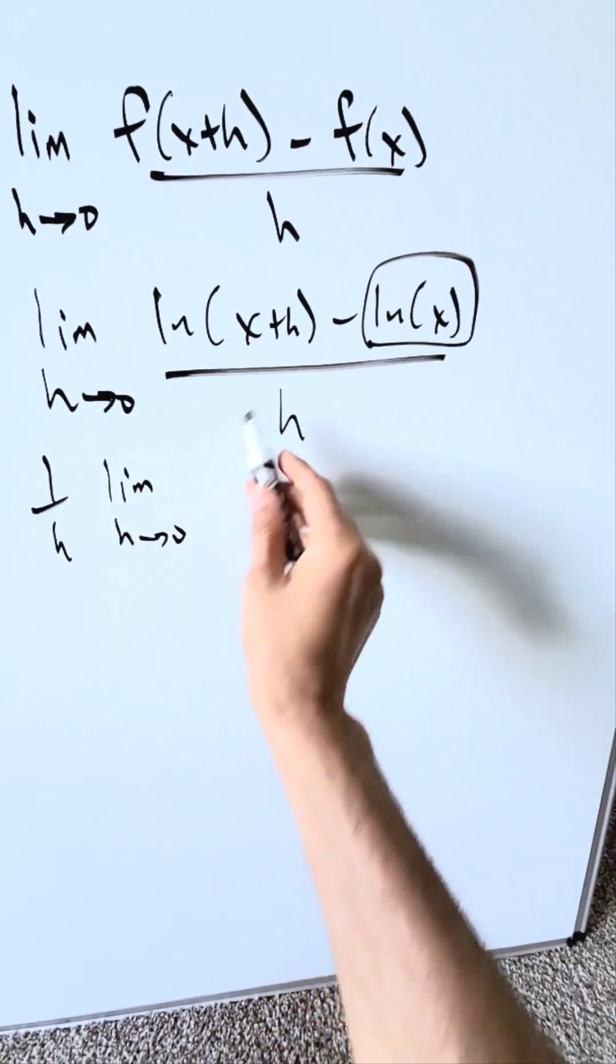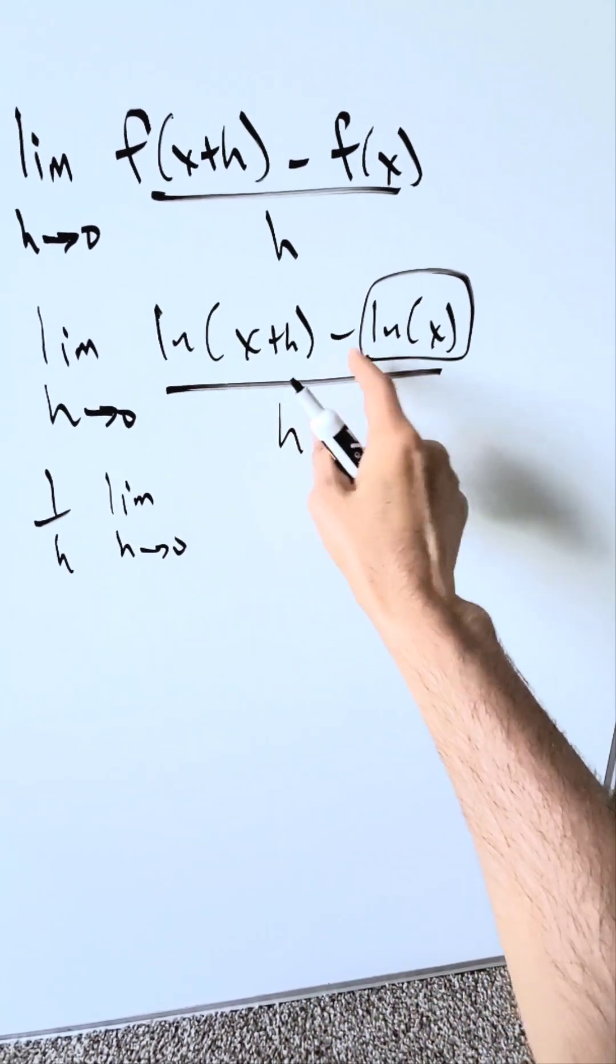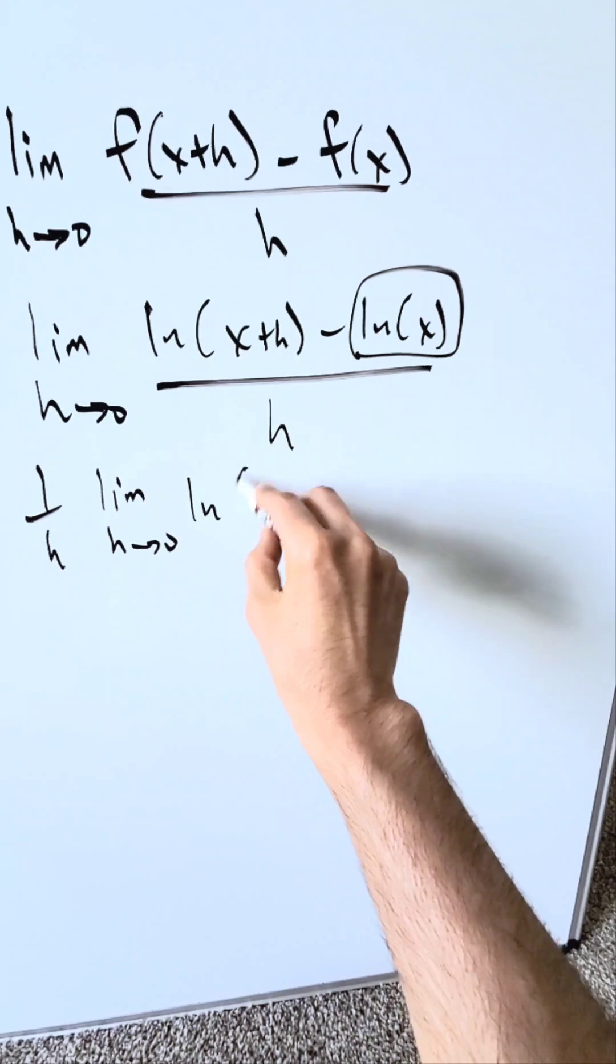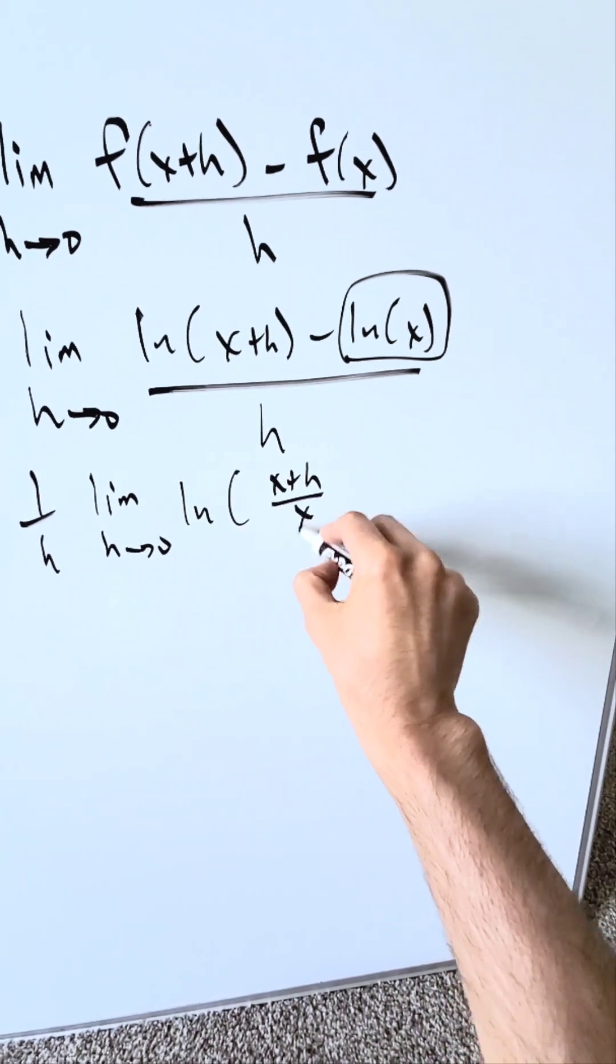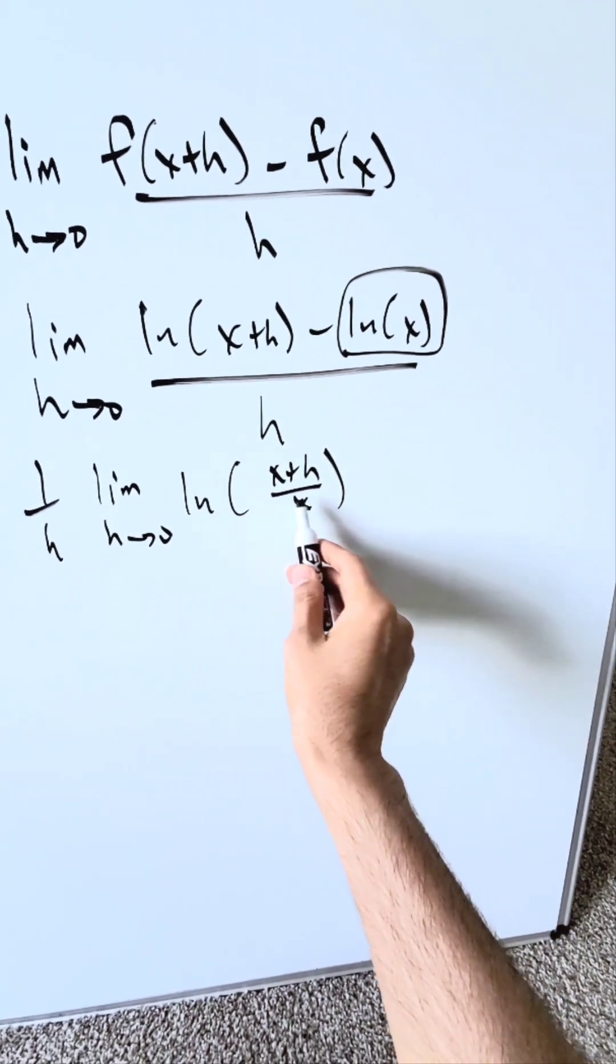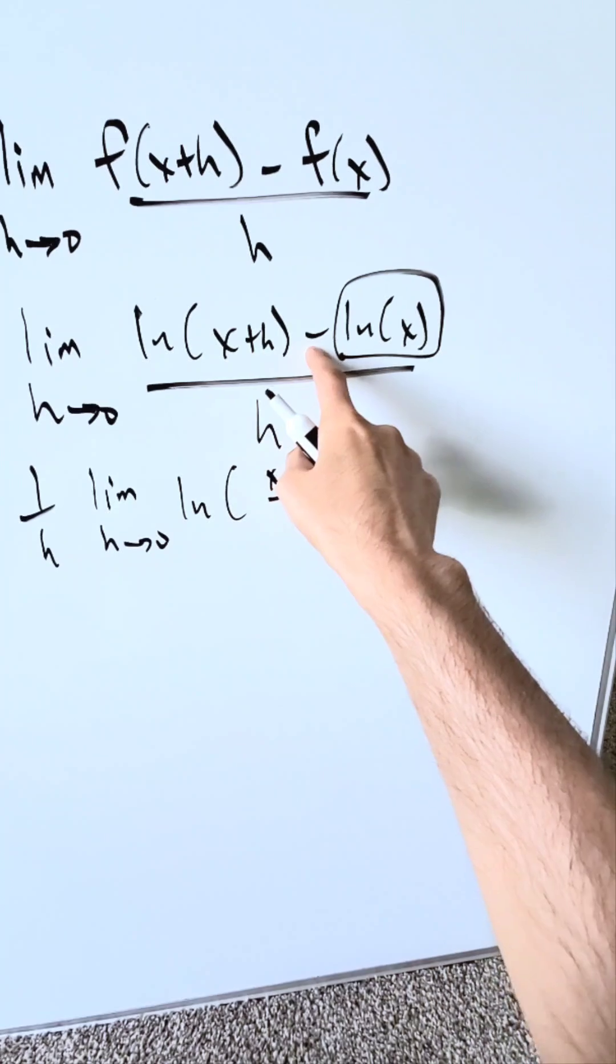Limit as h approaches 0. Look, I have independent logs here with a difference, it becomes a common log with a quotient, x plus h over x. You know this makes sense. Common log, quotient, independent logs, difference.